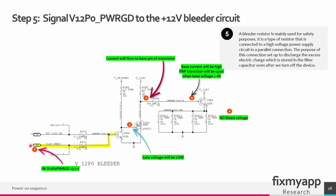When the power good signal comes from the Southbridge IC it goes to this transistor. Because there is a current at the base, this transistor will be turned on and the voltage on this line will go to ground. Because the voltage goes to ground, the gate voltage on the MOSFET will be low — this MOSFET is turned off. When this MOSFET is turned off, the voltage at this line goes to a PNP transistor. When there is a voltage or current at the base higher than 0 volts, this transistor will be open, and the bleeder circuit is disconnected. When the Xbox One is in standby mode, this power good signal is not present, so the transistor turns on and all capacitors discharge through the resistor network.